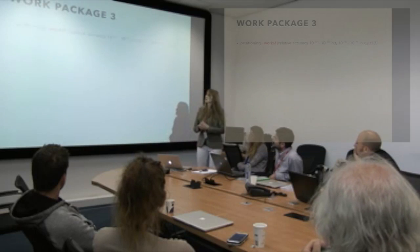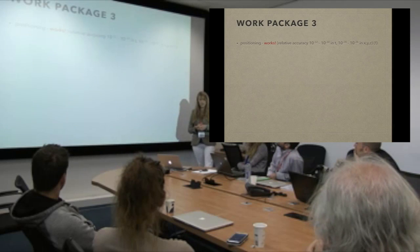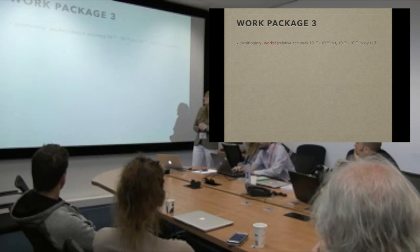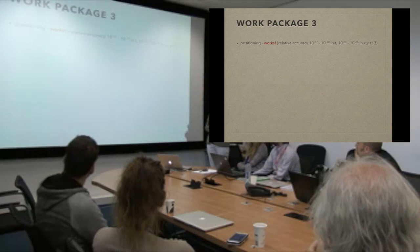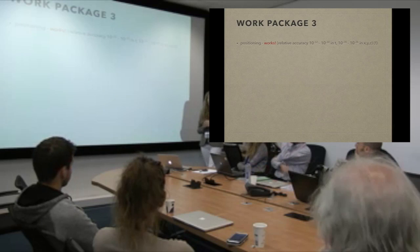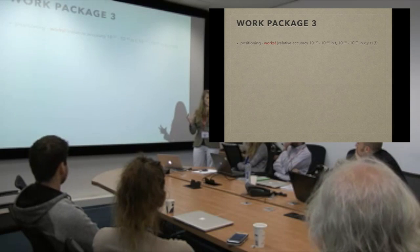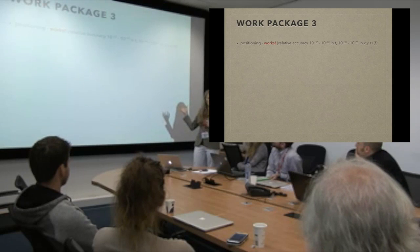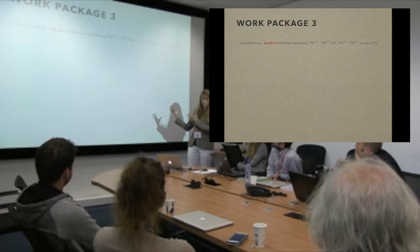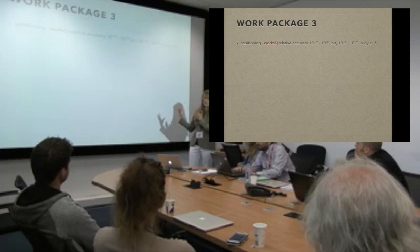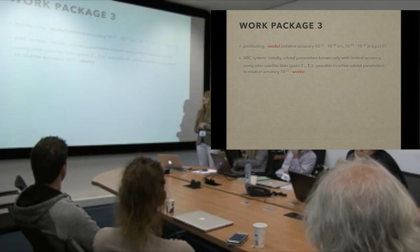In work package three, we first simulated a user on the ground to see if positioning still works — and we found that it works. The relative accuracy in position and time we can achieve is very high. These numbers are very extreme: they would imply determining position to atom size, which is of course not realistic. But these are theoretical limits; we showed there are no limitations in the numerical programs or the theoretical background. Then we simulated the ABC system, letting the satellites communicate with each other.